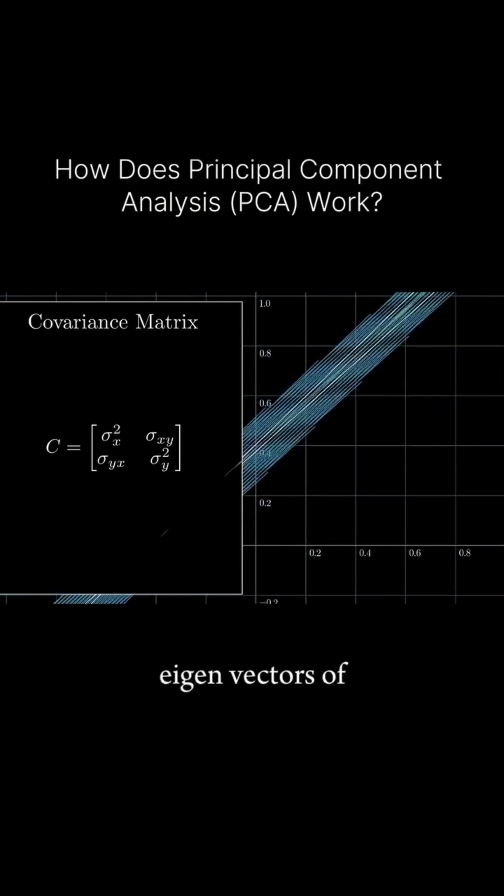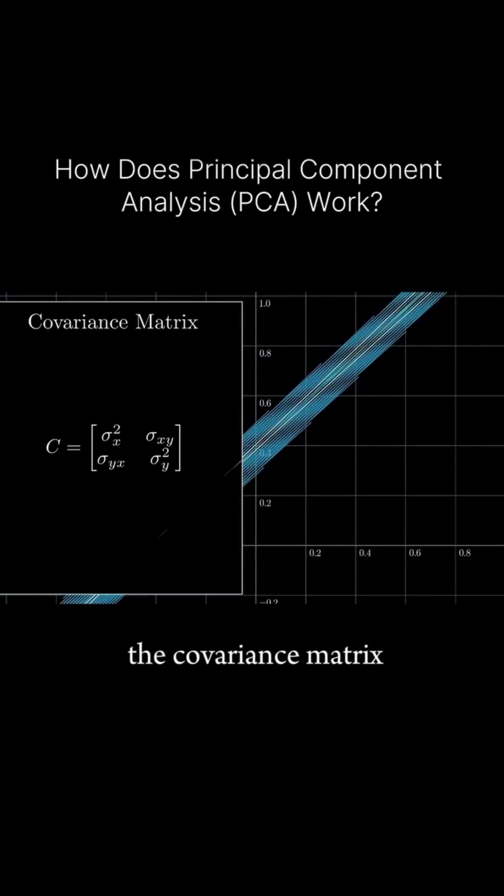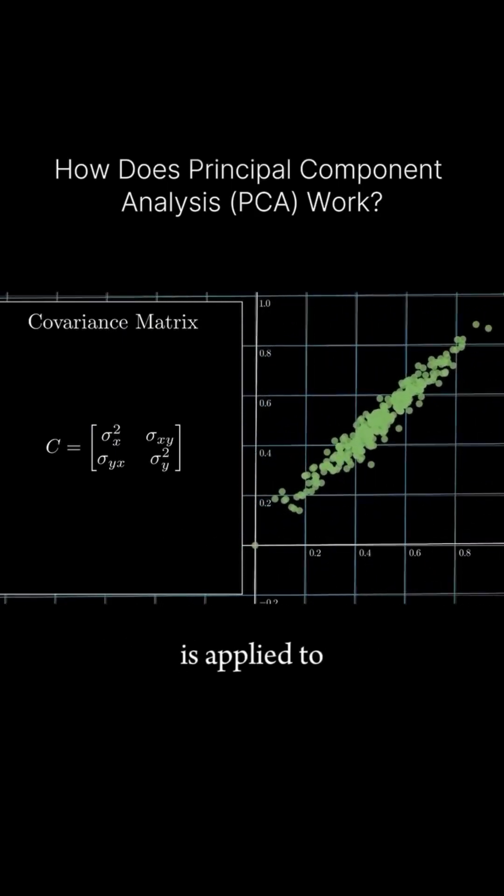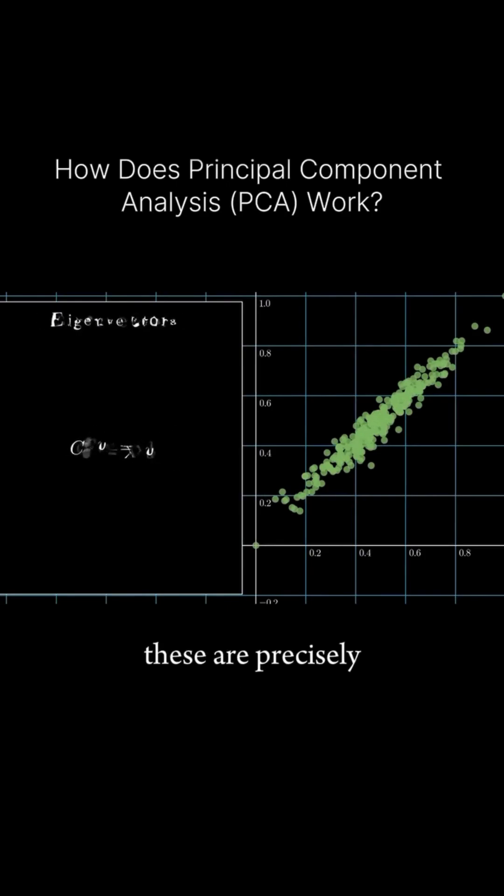The second step is to find the eigenvectors of the covariance matrix which are the vectors whose direction remains unchanged when the matrix is applied to them. These are precisely the vectors that satisfy this equation.